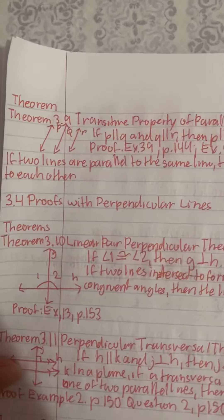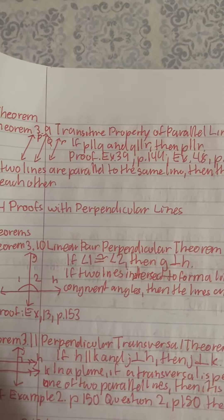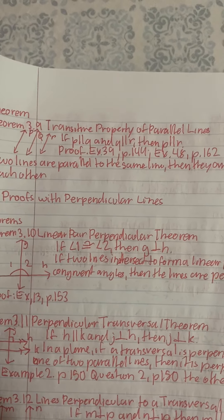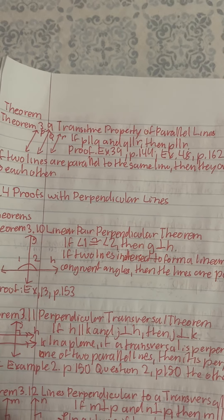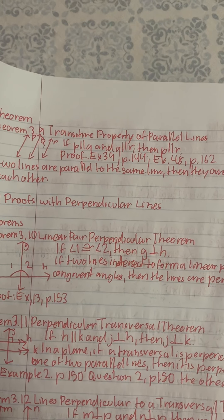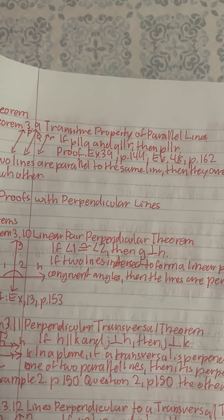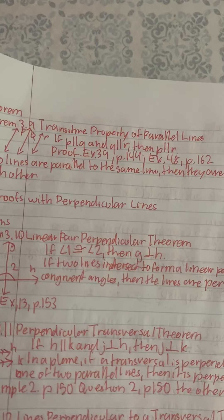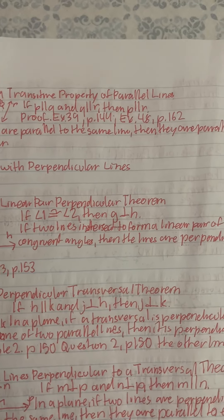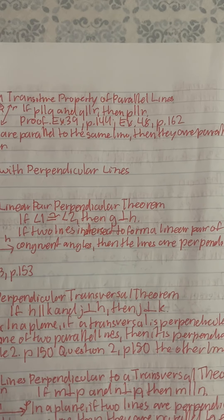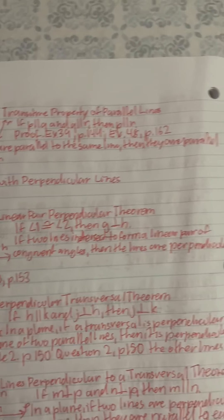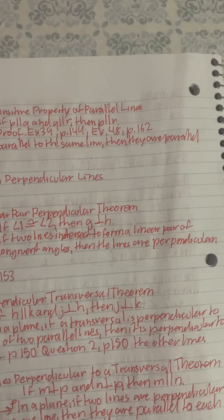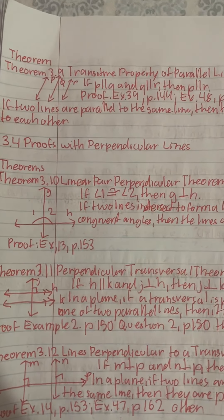Theorem 3.9, Transitive Property of Parallel Lines: If line P is parallel to line L, and line Q is parallel to line R, then P is parallel to R. Proof. Example: 39P144. If two lines are parallel to the same line, then they are parallel to each other.